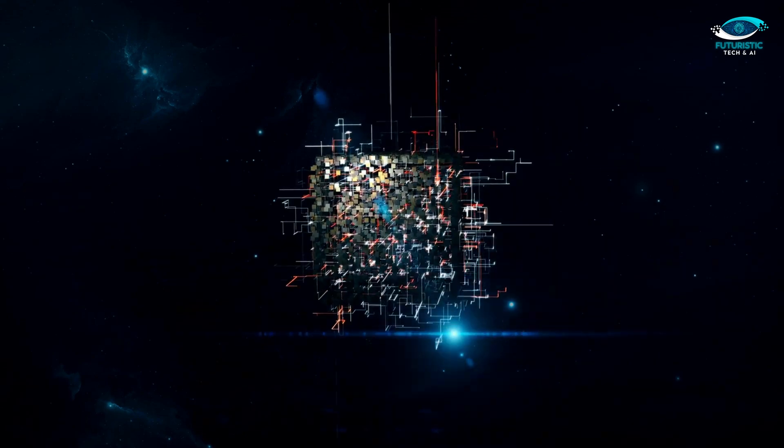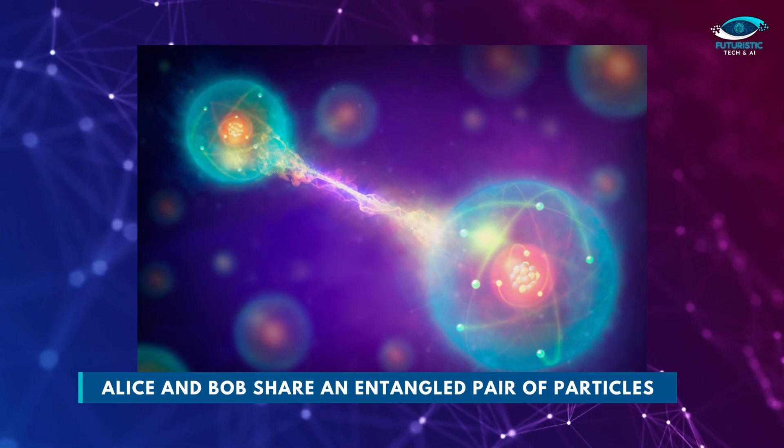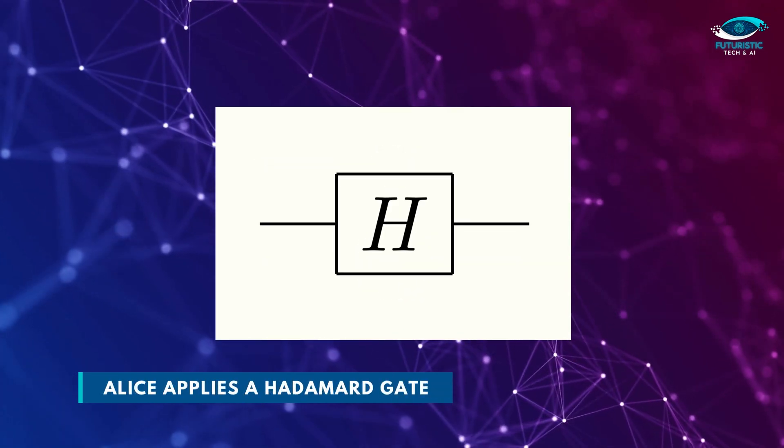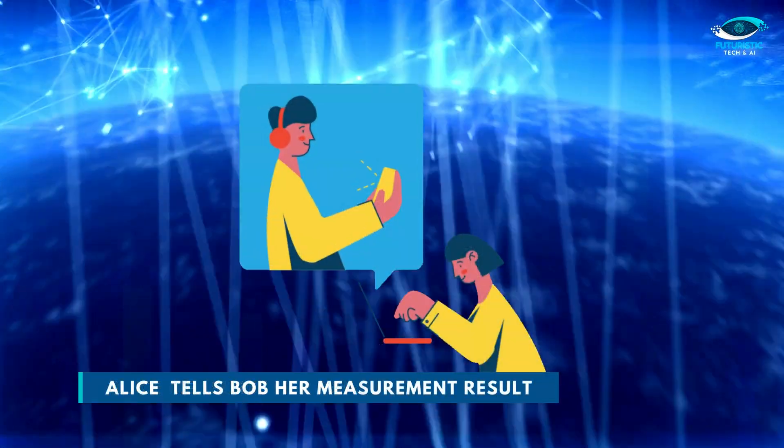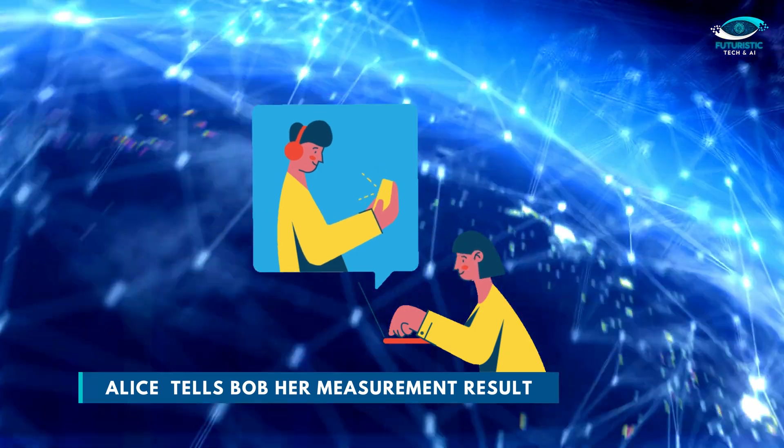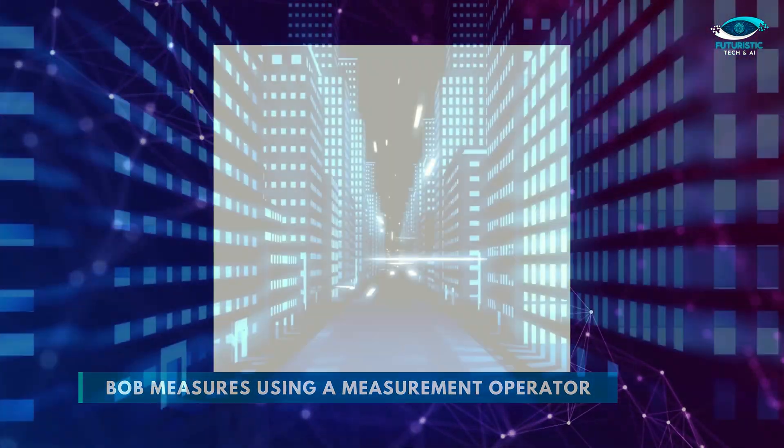To see how this works, let's go through the basic formalism. Alice and Bob share an entangled pair of particles. Alice applies a CNOT gate. Alice applies a Hadamard gate. Alice measures her pair. Alice contacts Bob on a classical communications channel and tells him her measurement result. Bob measures using a measurement operator.